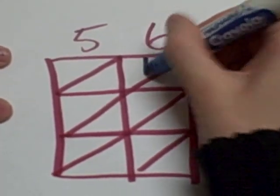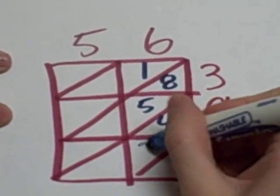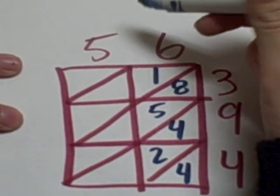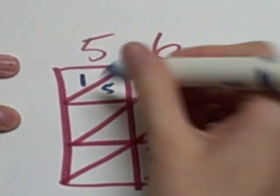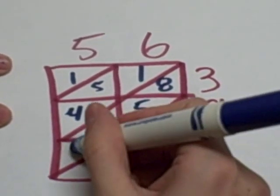So 6 times 3 is 18, 6 times 9 is 54, 6 times 4 is 24, 5 times 3 is 15, 5 times 9 is 45, and 5 times 4 is 20.